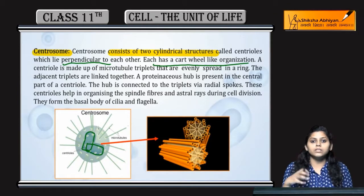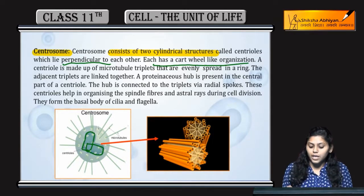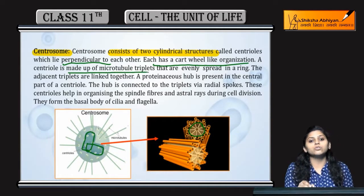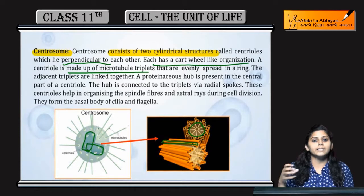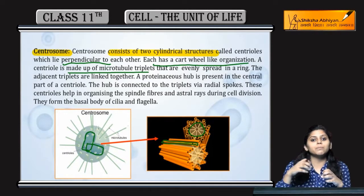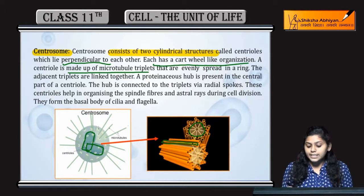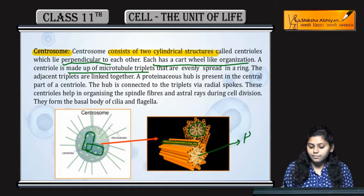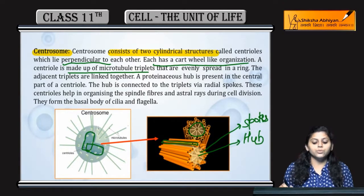They have a cartwheel-like organization. Yeh jo dono perpendicular cylindrical structures hain, yeh cartwheel-like structure hote hain. You can see here — cartwheel-like structure hai. Yeh microtubules ki triplets se bane hote hain. Yeh microtubules triplets mein arrange hoti hain, teen-teen ke pair mein. Center mein hub form karti hain, aur spokes ki help se microtubules se attached hoti hain.